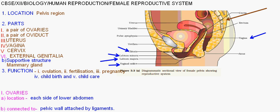Now coming to the location of the female reproductive system. The female reproductive system is located in the pelvic region. As you can see, this arrow is showing the pelvic region. The bone present here is the pelvis, so this is the pelvic region.